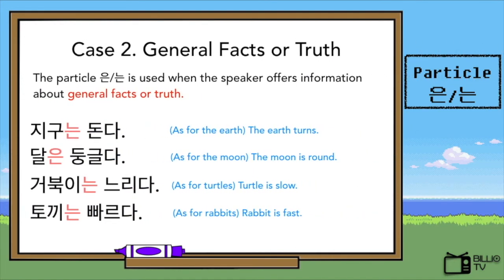The second case is general facts or truth. The particle 은/는 is used when the speaker offers information about general facts or truth. For example: 지구는 돈다 — the earth turns. 달은 둥글다 — the moon is round. 거북이는 느리다 — a turtle is slow. And 토끼는 빠르다 — a rabbit is fast. We cannot deny these facts because they are already scientifically proven.